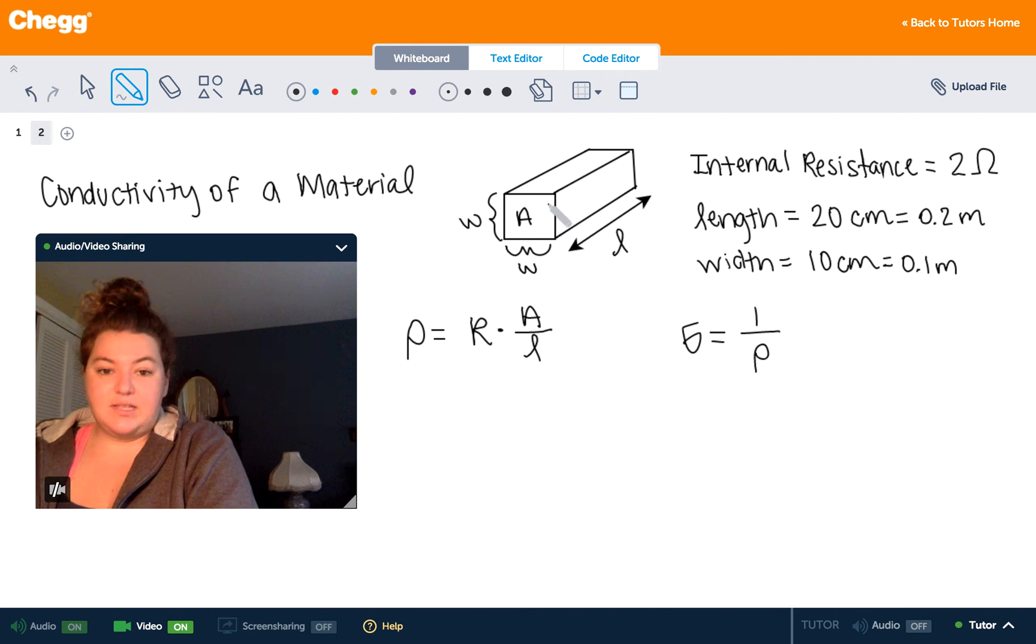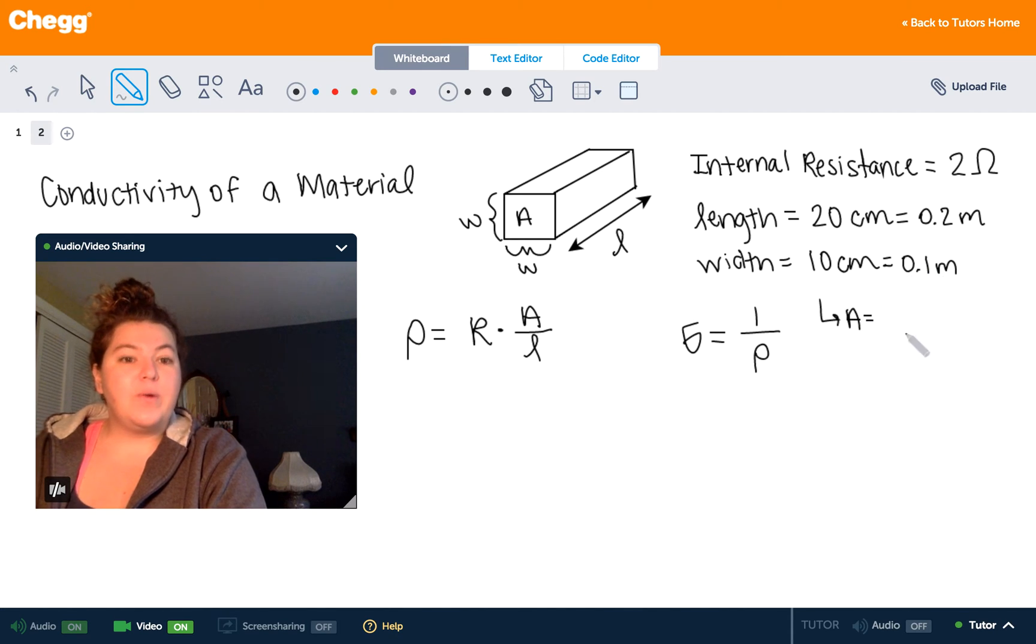So since we know that this is a square, the width and the width are the side lengths of a square, we can find the cross-sectional area as being 0.1 times 0.1, or area of a square, 0.1 squared. And 1 tenth squared is just 1 hundredth. So we have 0.01 meters squared.